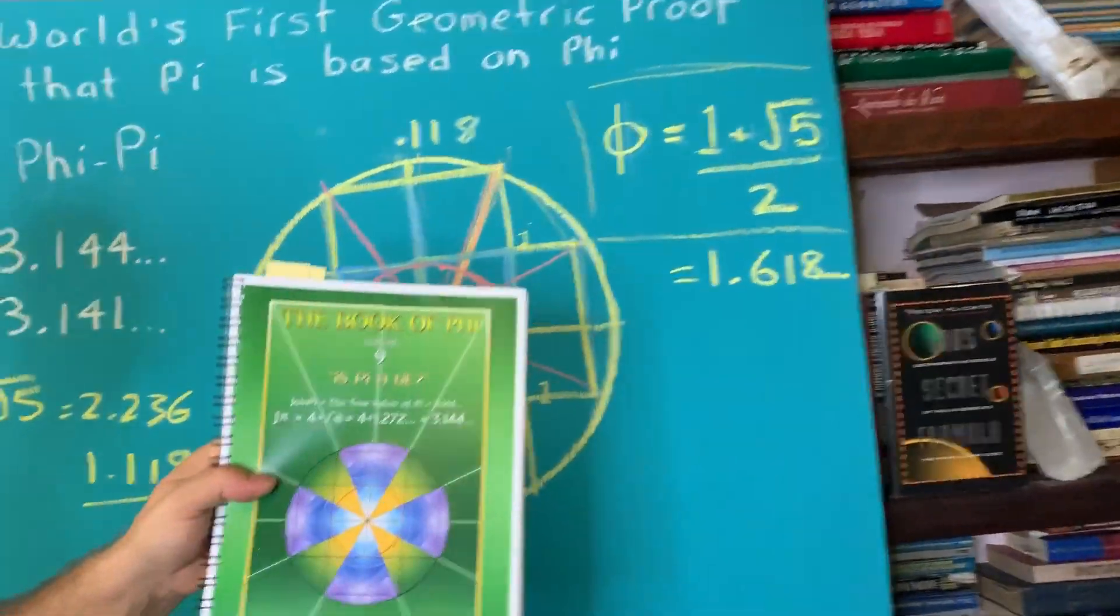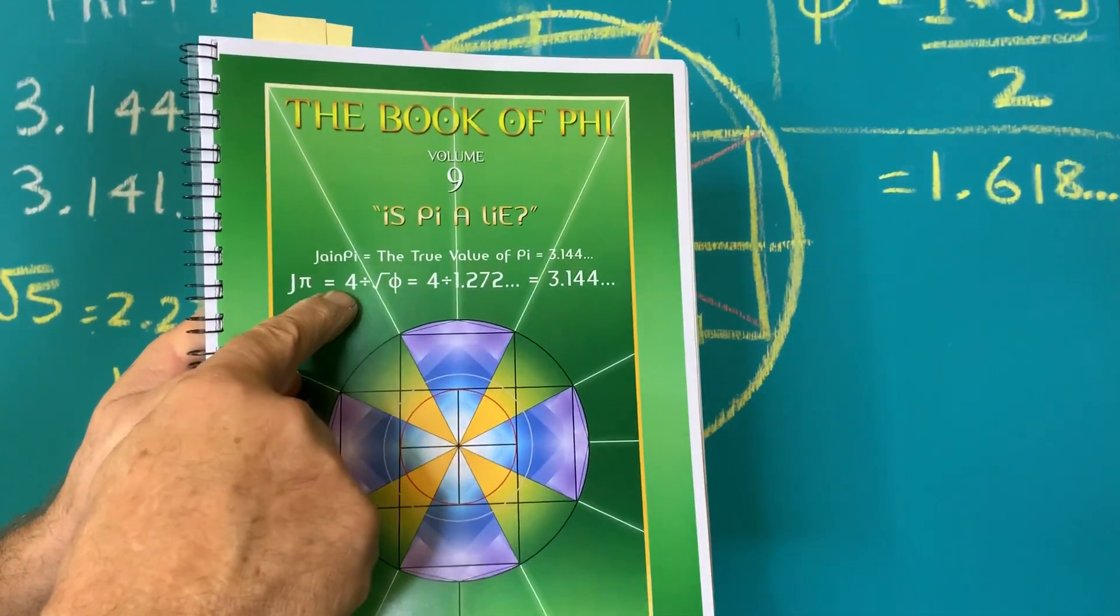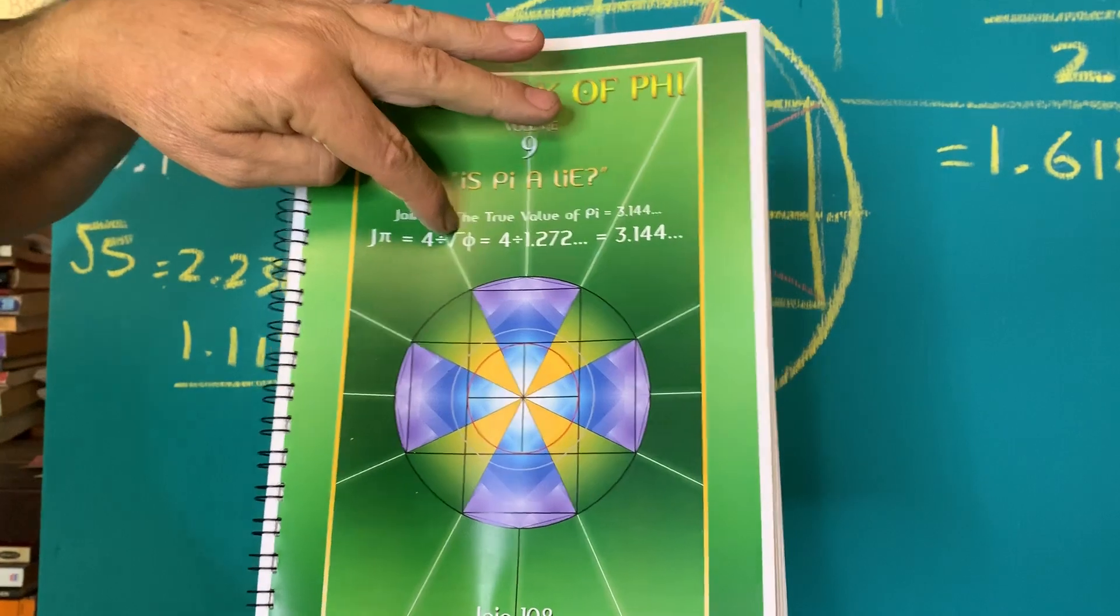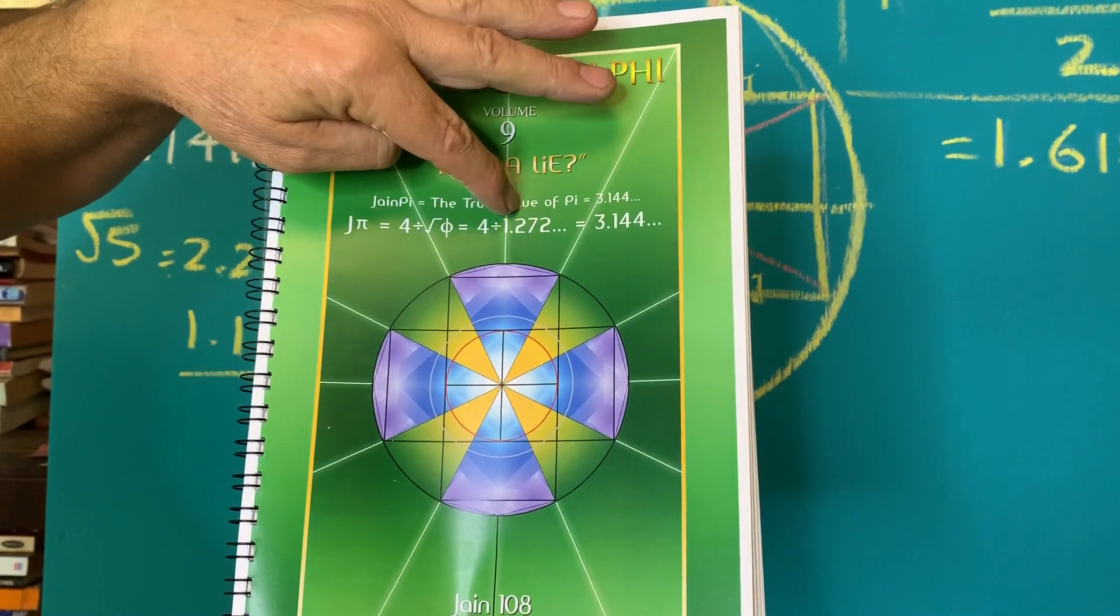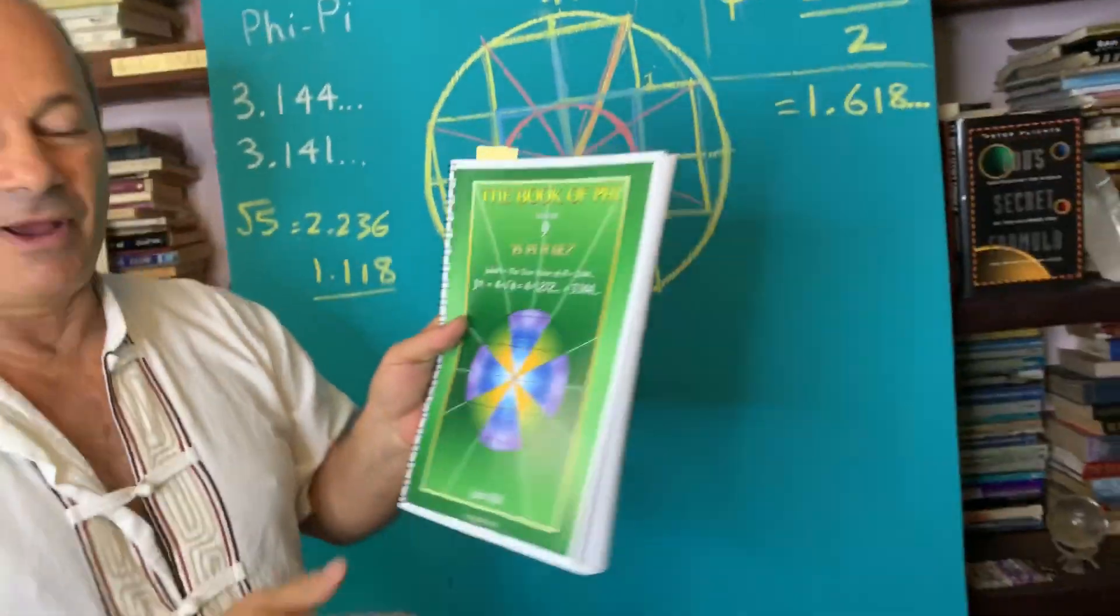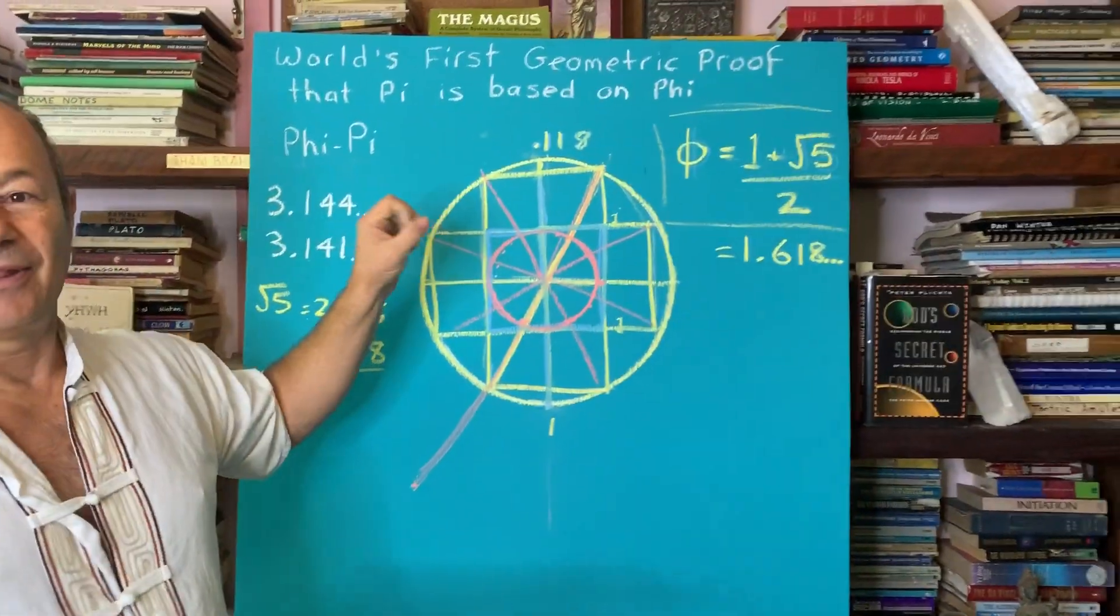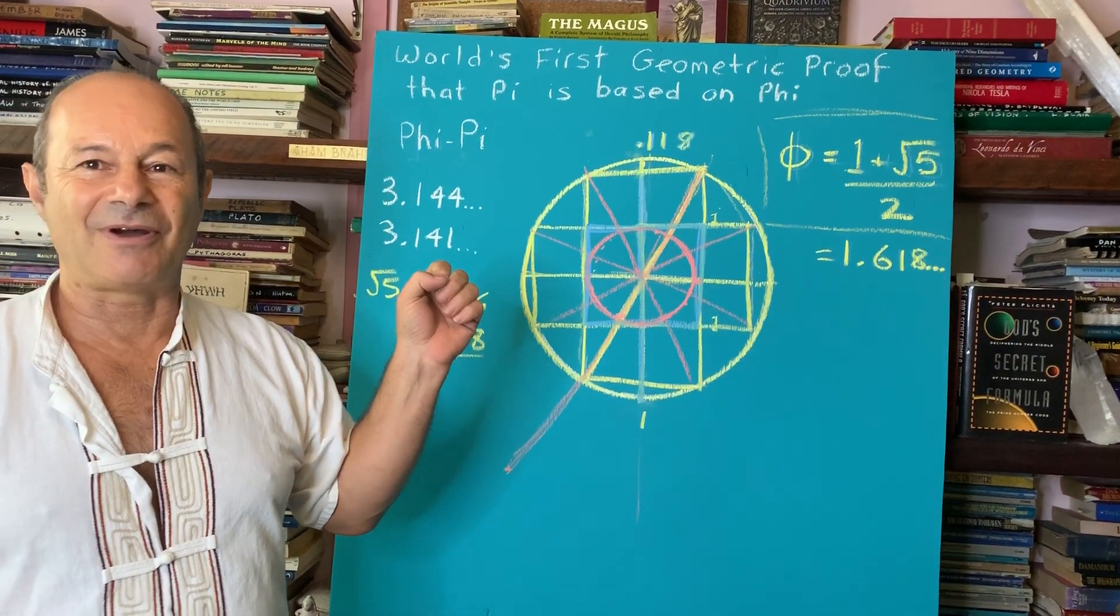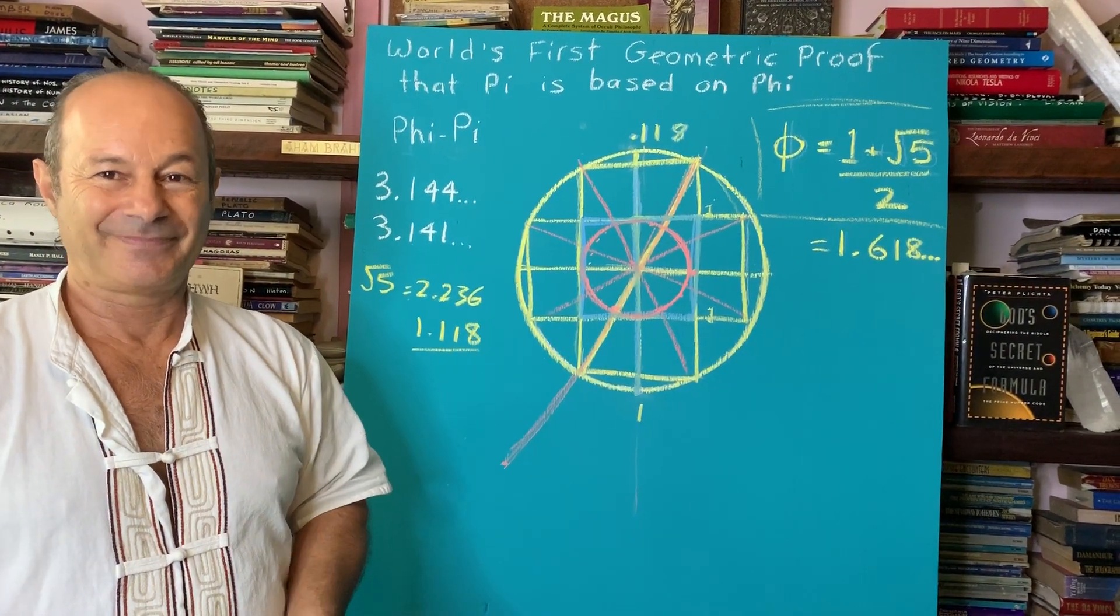This was based on my PowerPoint that the true value of pi is four divided by the square root of five. Square root of five is 1.272. So this is how we achieve 3.144. So I'm really honored to release this method. It's a navigational device, like a tuned instrument of the highest order. Thank you.